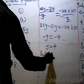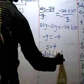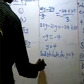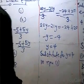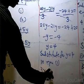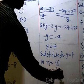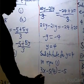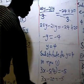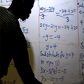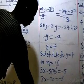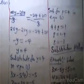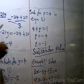Now substitute y equals 4 into equation 1. I have 3x minus 5 times 4 equals minus 5, so 3x minus 20 equals minus 5, giving 3x equals 15, and x equals 5. This is the same answer we got using the elimination method.